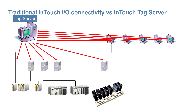For example, with five InTouch nodes connecting to five data sources, the demand on the plant network is reduced potentially 80% or more due to the efficiency of the Window Viewer to Window Viewer communication.